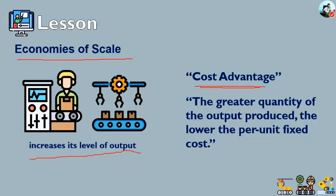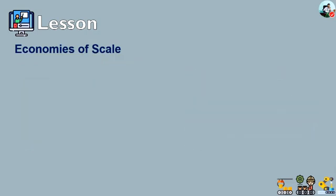Economies of scale would also result in a fall in the average variable cost — the average non-fixed cost — as output increases. This is brought about by operational efficiencies as a result of an increase in the scale of production. Economies of scale can be implemented by a firm at any stage of the production process, where production refers to the economic concept of manufacture and involves all activities related to a commodity.